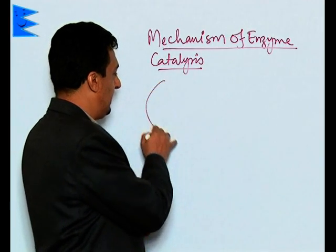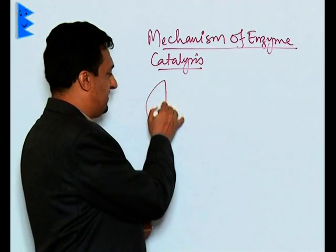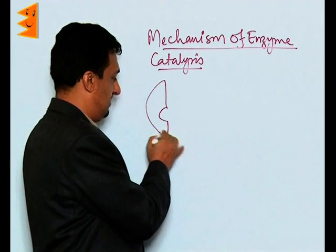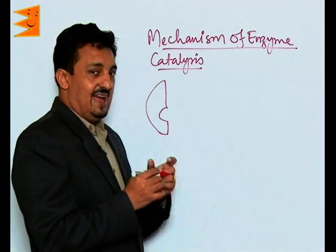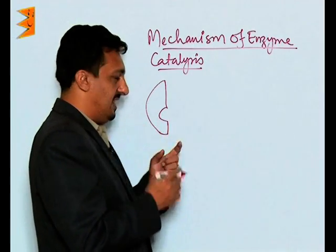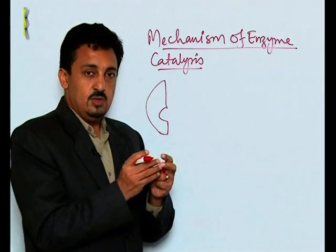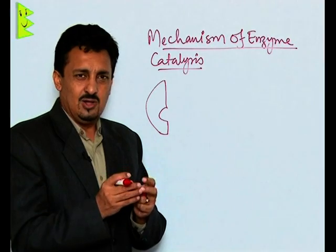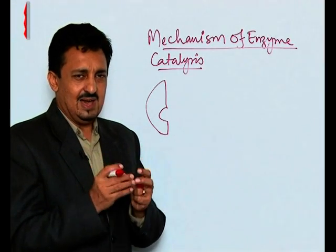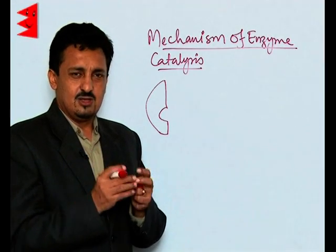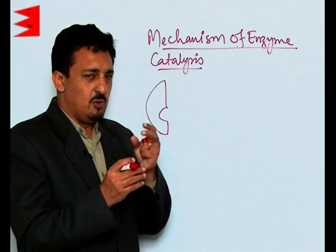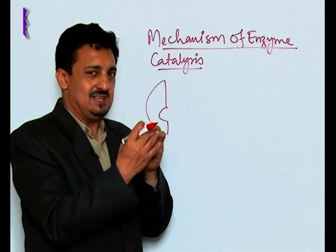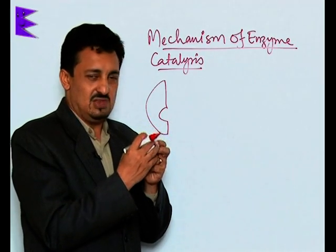These enzymes have many active sites on their surfaces. These active sites have functional groups like alcohols, thiols, aldehydes, and other groups, through which they easily bind the reactant molecules on their surfaces.